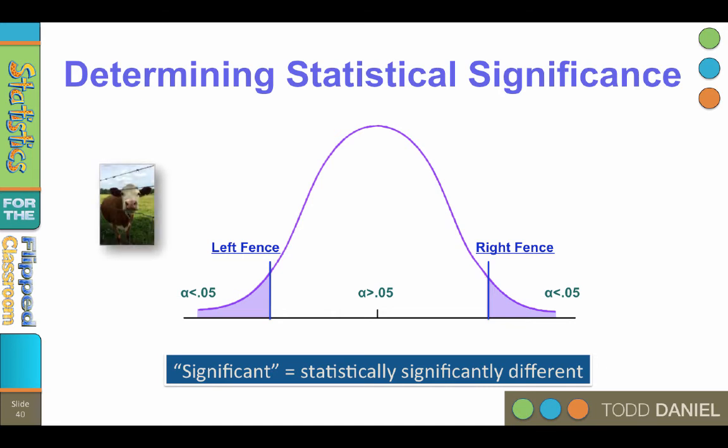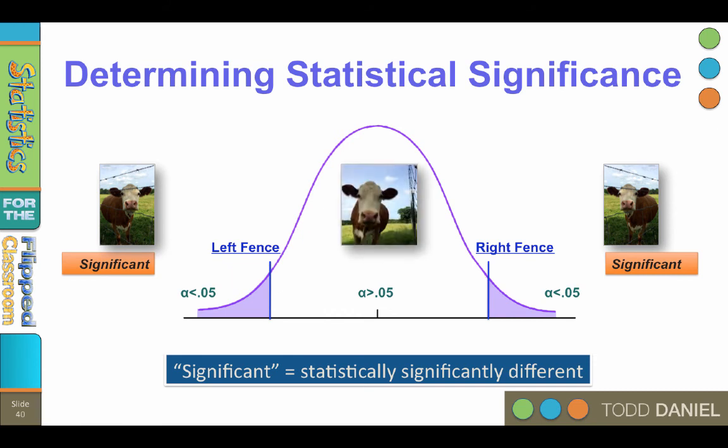If your sample mean is outside of the left fence, the results are significant. The sample mean is different than the population mean. If your sample mean is outside of the right fence, the results are significant. The sample mean is different than the population mean. But if the results are inside the fence, not in the region of rejection, then the results are not significant. The sample mean is not significantly different than the population mean.